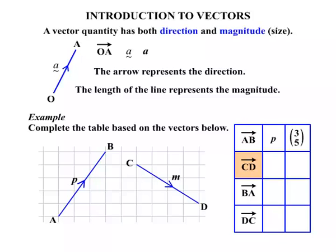What about vector CD? Well let's have a look at it. It would be letter m. That would be the name of the vector. Now in terms of distance across and up or down, we're going across 4 and down 3. So negative 3 there. So in brackets we'd write 4, negative 3.